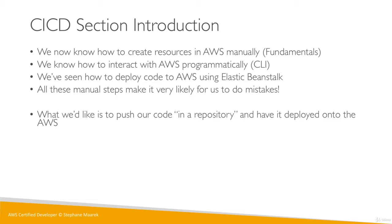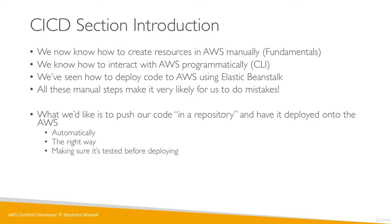So this is what we'd like to get to. We'd like to just push our code — change the code straight from our computer, push it somewhere we'll call a repository — and automatically we want things to happen magically, such as the code being deployed on AWS. We want things to happen automatically, the right way, making sure your code is tested before it's deployed. We don't want to push bad code into production.